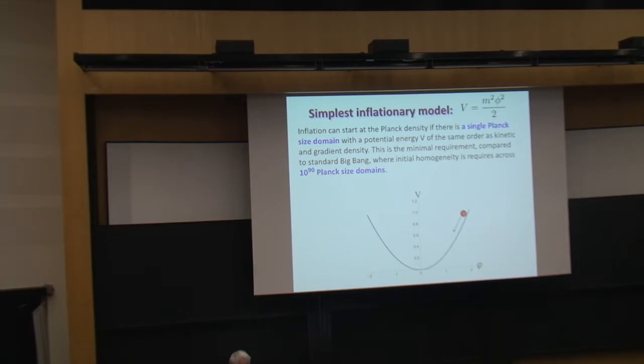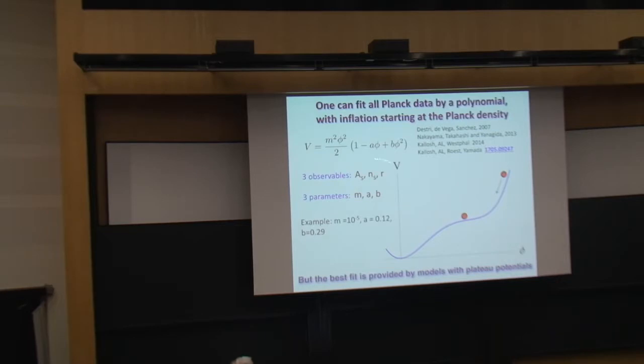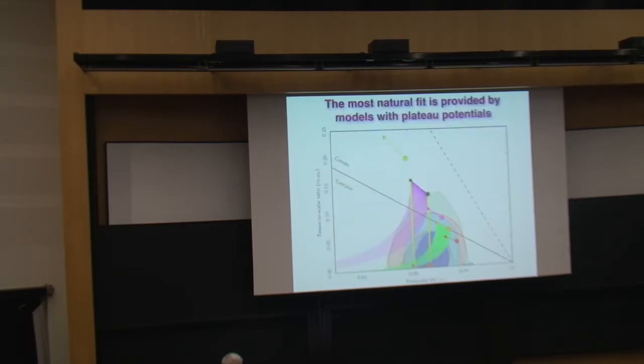However, this model, as we all know, is practically ruled out. But this model, you just take a slight generalization of it. Instead of quadratic, it's a quadratic minus cubic plus quartic. Suddenly, this simple model can fit all Planck data present and future for ns and R and amplitude. You can just use three parameters of the model to fix three observables. You do not need anything better than that. And also, inflation can still start here with Planck intensity, so you don't have any problem with starting it. Is it a nice model? It's an okay model.